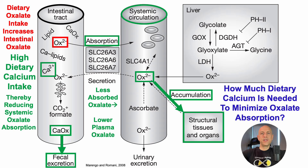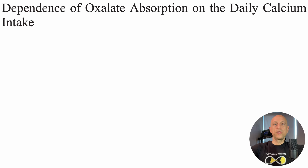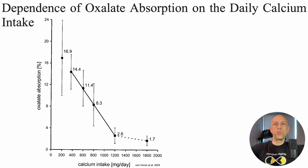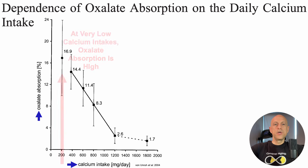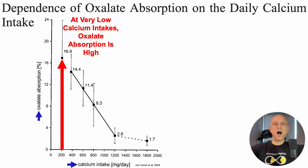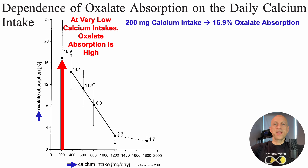With that in mind, how much dietary calcium is needed to minimize oxalate absorption? We're going to look at a randomized controlled trial where people were fed oxalate along with varying amounts of calcium, and oxalate absorption from the intestine into the blood was evaluated. On the y-axis we have oxalate absorption — how much of the initial amount was absorbed — plotted against calcium intake in milligrams per day. At very low calcium intakes, oxalate absorption is relatively high: for a 200 mg calcium intake per day, there's about 17% oxalate absorption.